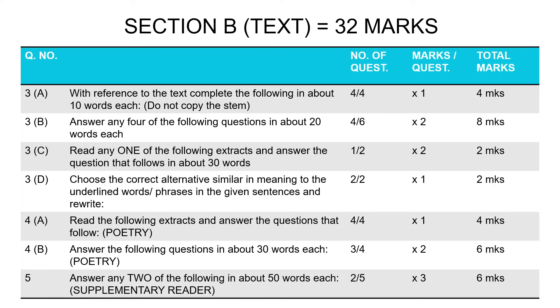The fifth question is your supplementary reader. You are given five questions; you have to answer any two of them. This is a very long answer, about 50 to 60 words, for a total of three marks per question, giving you six. So for your prose reader you have 16 marks, for your poetry it's 10, and for your supplementary it is six, which gives you a grand total of 32 marks.